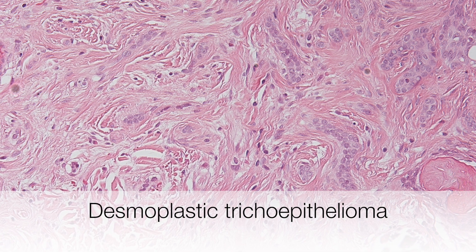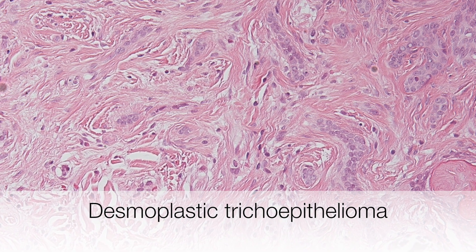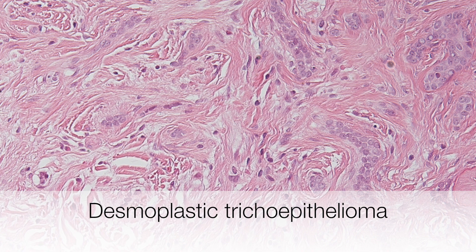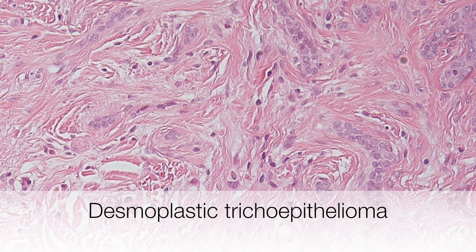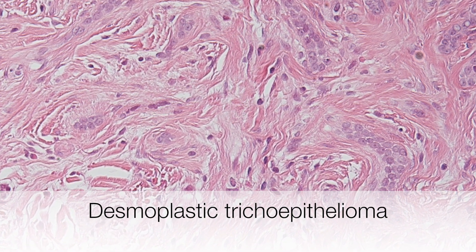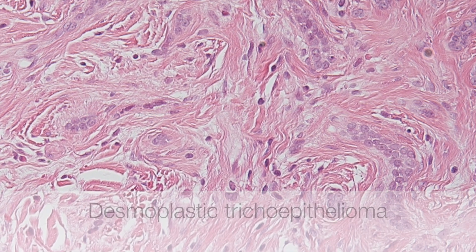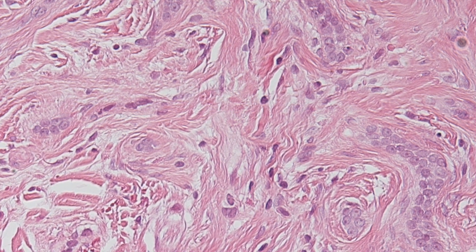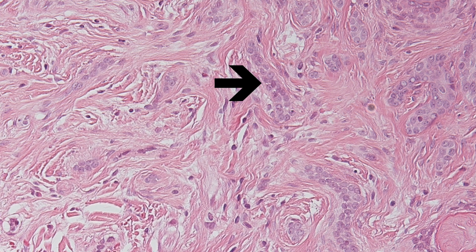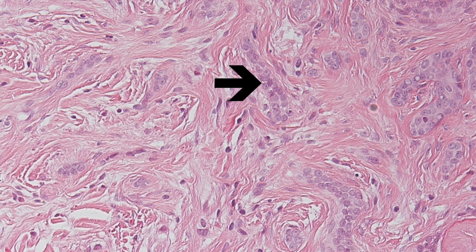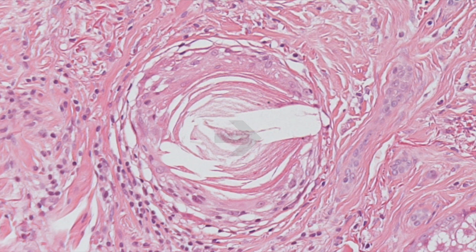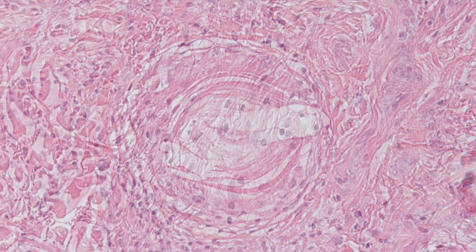Here is an example of a desmoplastic trichoepithelioma, a skin adnexal tumour derived from hair follicle epithelium. Diagnostic features of this lesion are narrow strands of epithelial cells and horn cysts that lie in an abundant desmoplastic stroma.